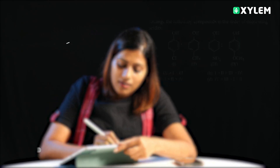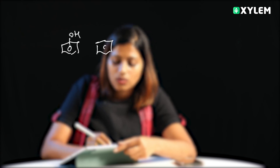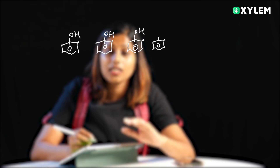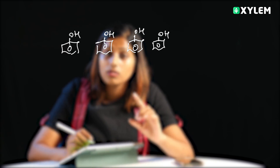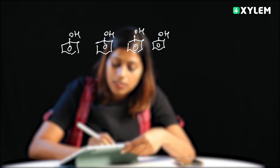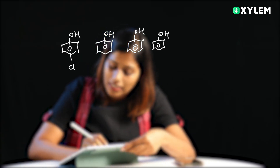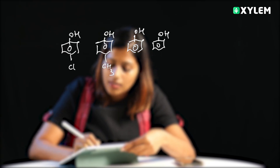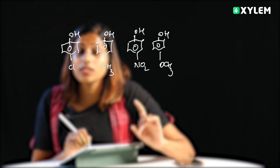See here — phenolic systems are not going to change the functional group. Here we are going to have the same functional group. In the first case we have chlorine, second CH3, third NO2, fourth OCH3. What is the core idea? Electron withdrawing groups increase acidity character.